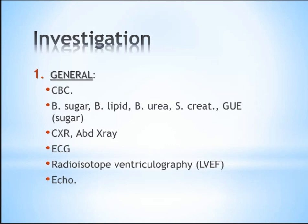ECG is very important to exclude any myocardial insult. Radioisotope ventriculography assesses ventricular ejection fraction — this is very important because there is comorbidity between chronic peripheral arterial disease and central arterial disease. Echocardiography (ECHO) is also very important because the central arterial disease should be corrected before addressing the peripheral arterial disease.